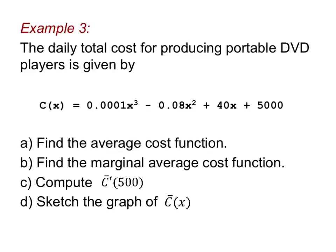Let me just make a note that when it says find the average cost function, we're looking for C bar. When it says find the marginal average cost function, we're looking for C bar prime. Here we're going to plug 500 into C bar prime, and then notice we're just going to graph the average cost function. We'll use a tool to do that.